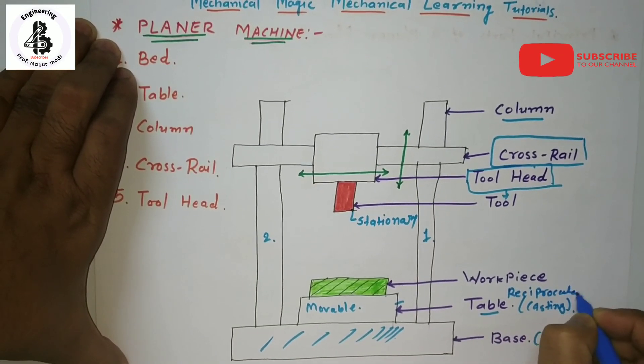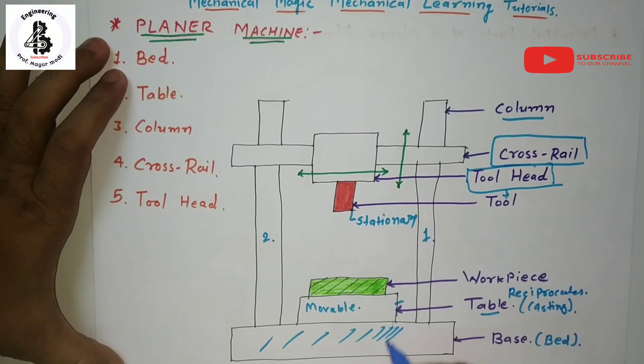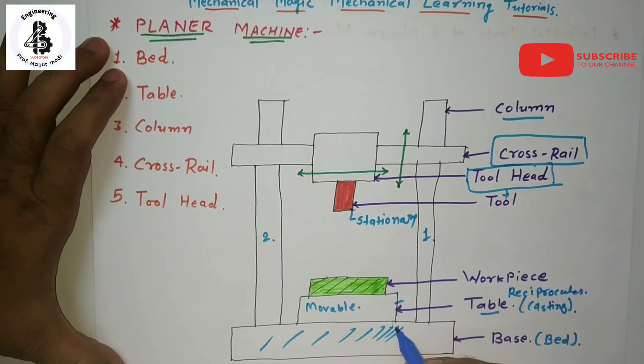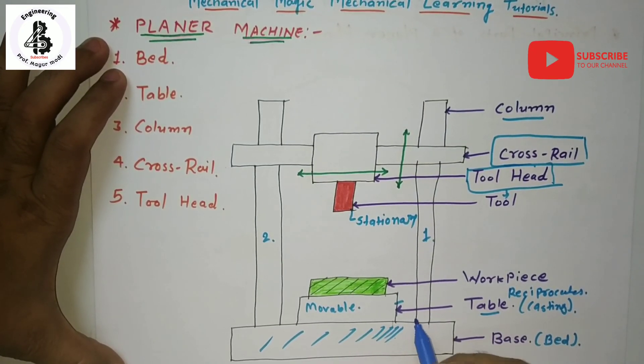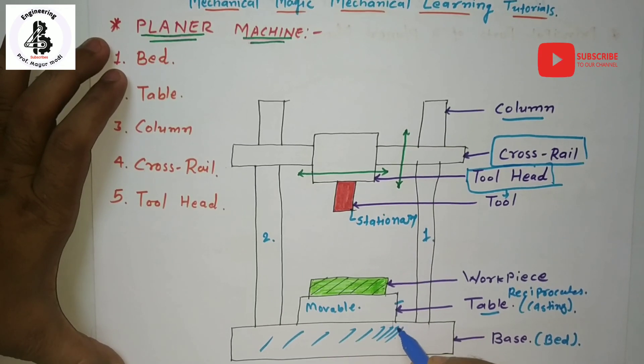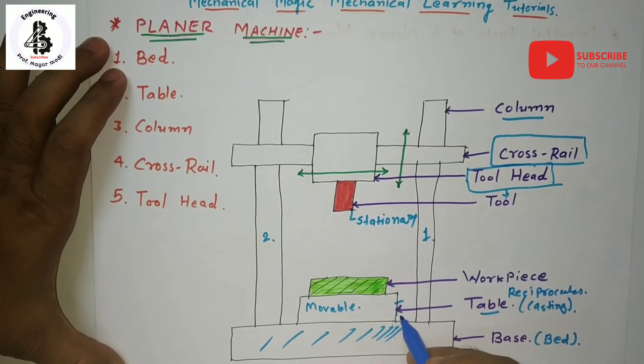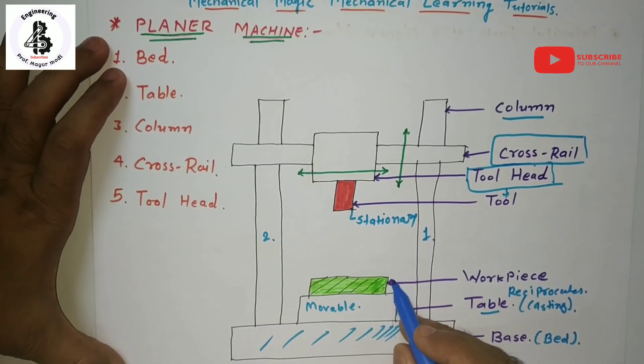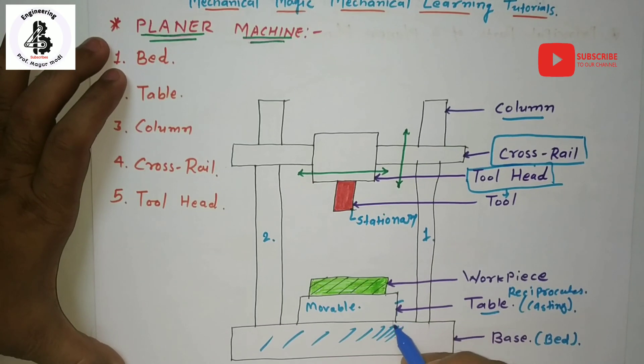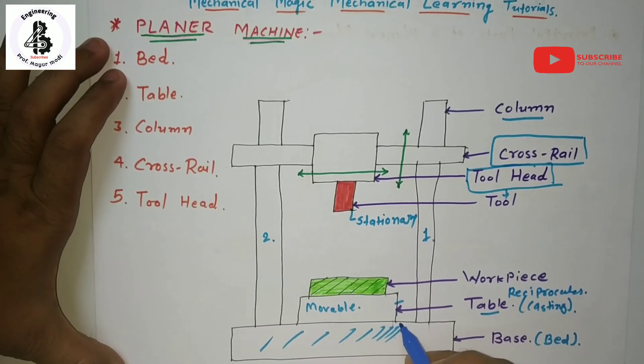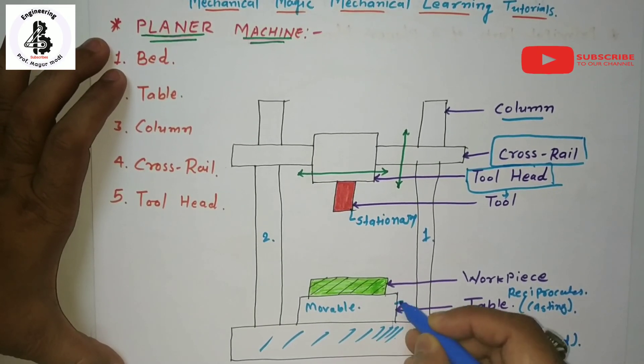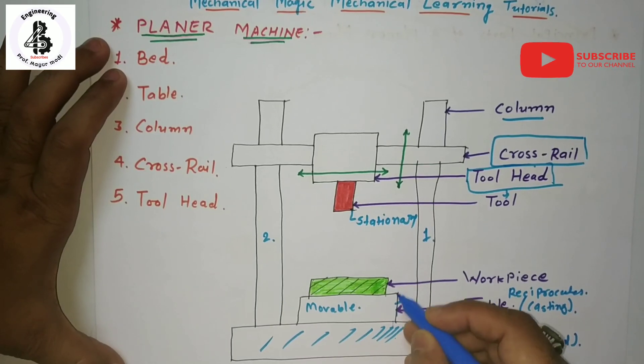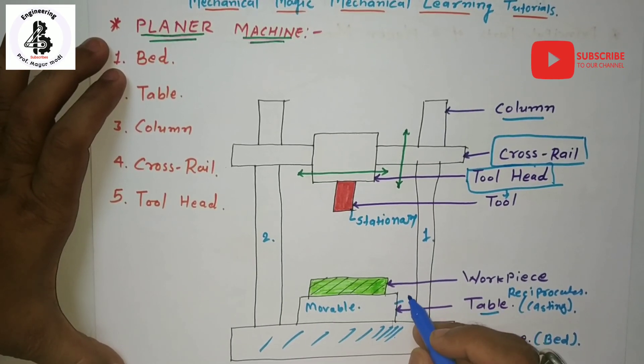It reciprocates along the guideways on the bed. It carries longitudinal T slots and the holes are accommodated for clamping the bolts onto the workpiece. The table is driven either by wearing long hydraulic cylinder, pinion gear drive, or rack and pinion mechanism for rotary motion that will be converted into reciprocating motion.